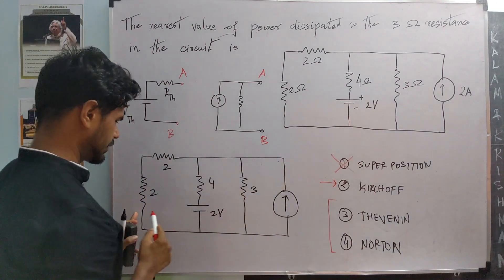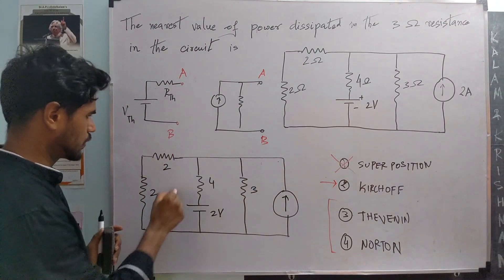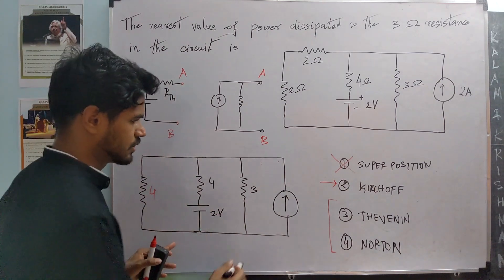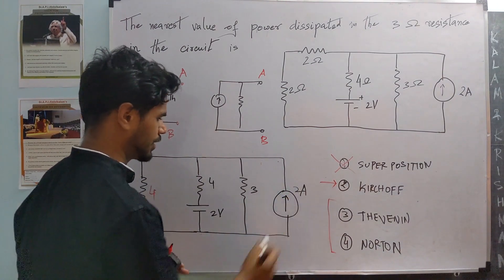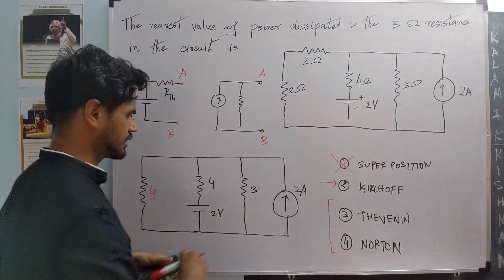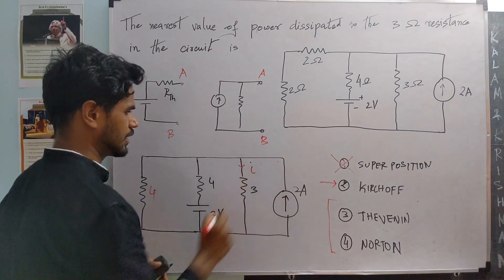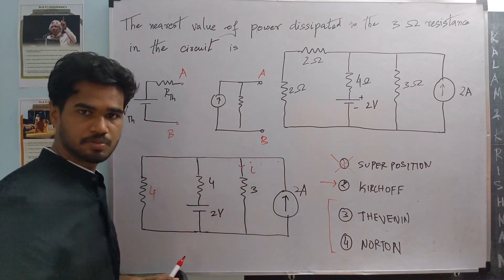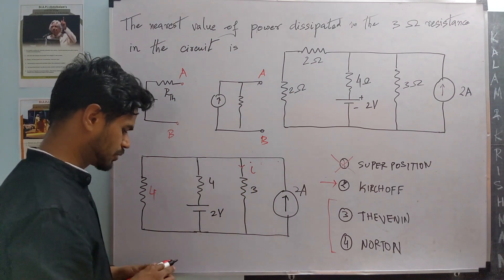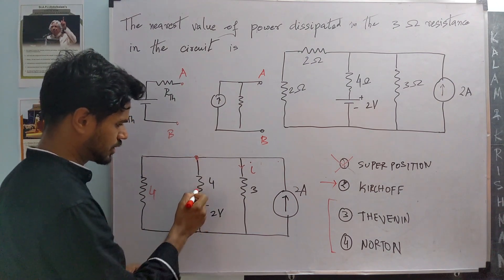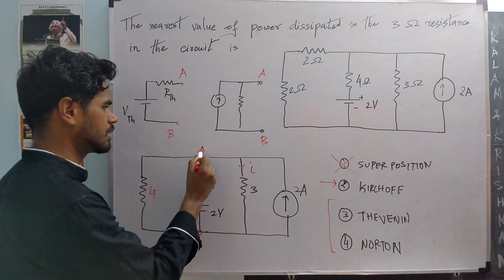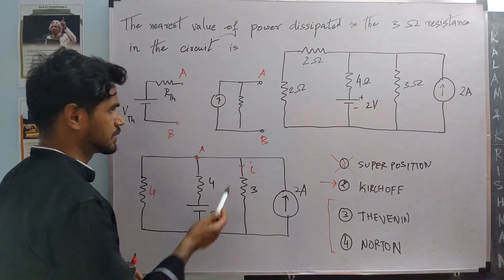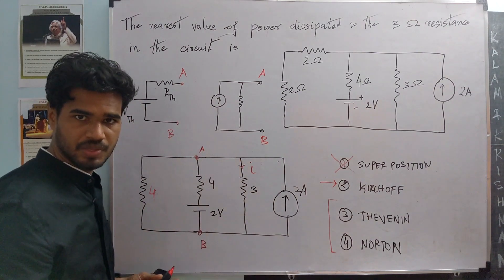I have redone the circuit here. The first thing is to replace the two series resistances with their equivalent, which is 2 plus 2 equals 4. We want the current in the circuit. We have a 2 ampere current source and we want the current I in the 3 ohm resistance. In order to simplify this, notice these two resistances and the voltage source are connected between points A and B.